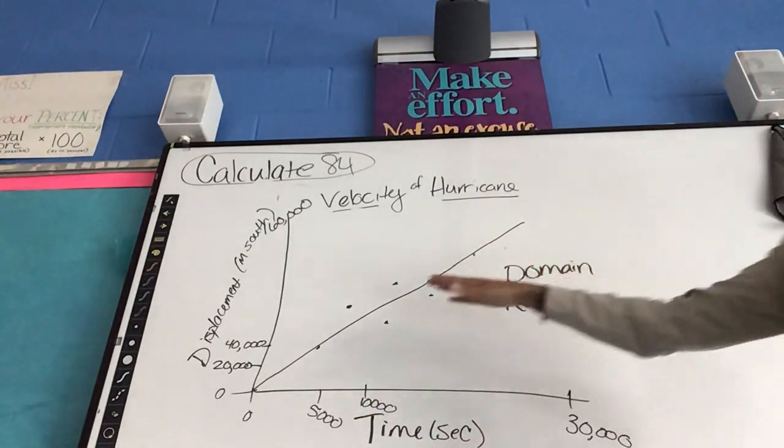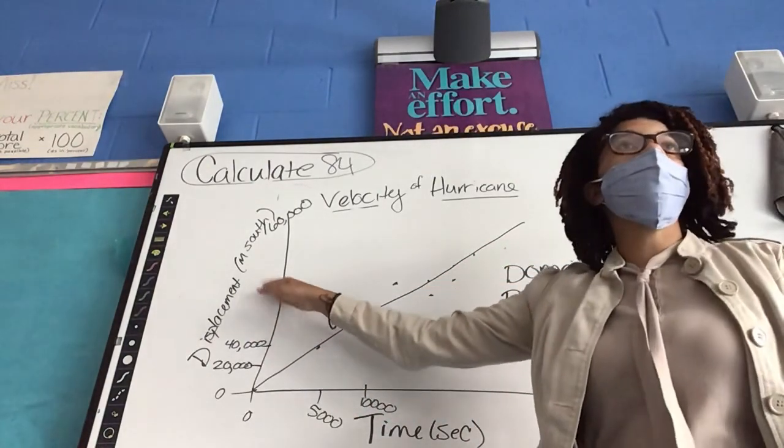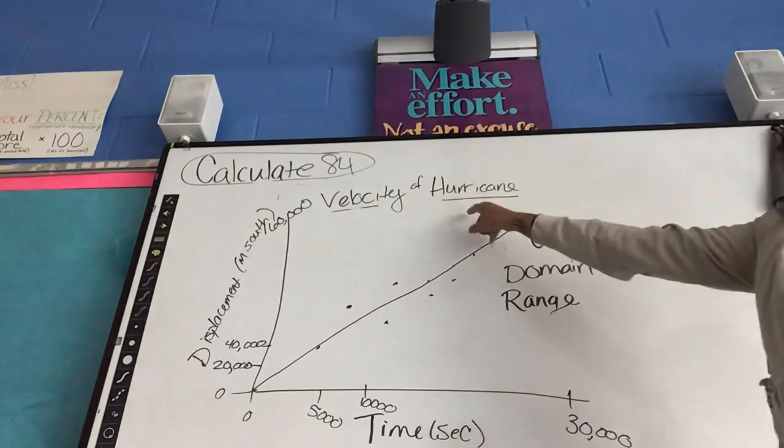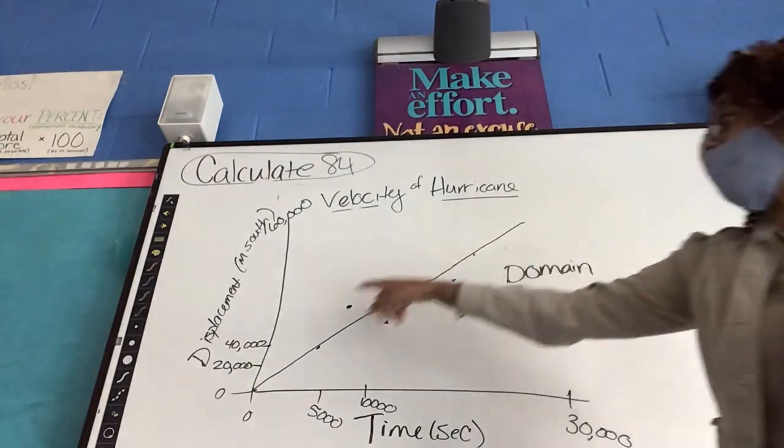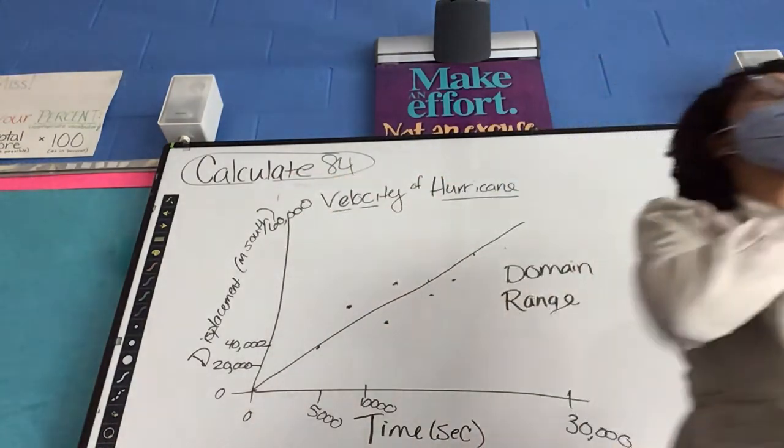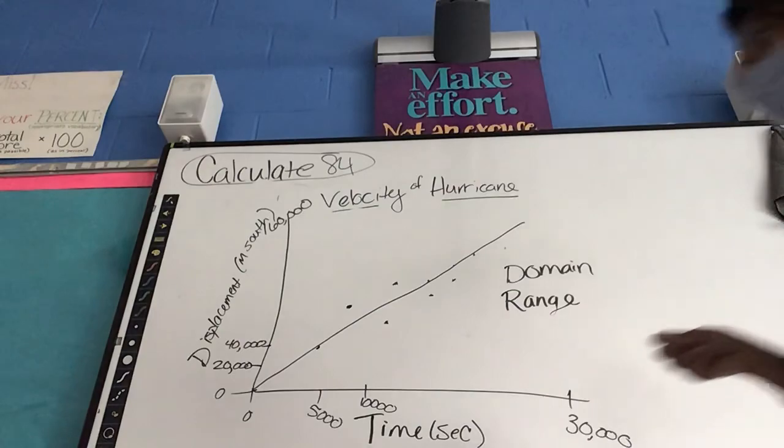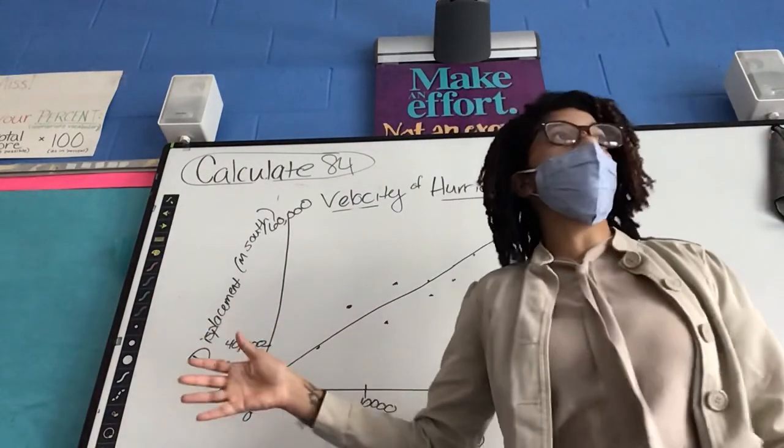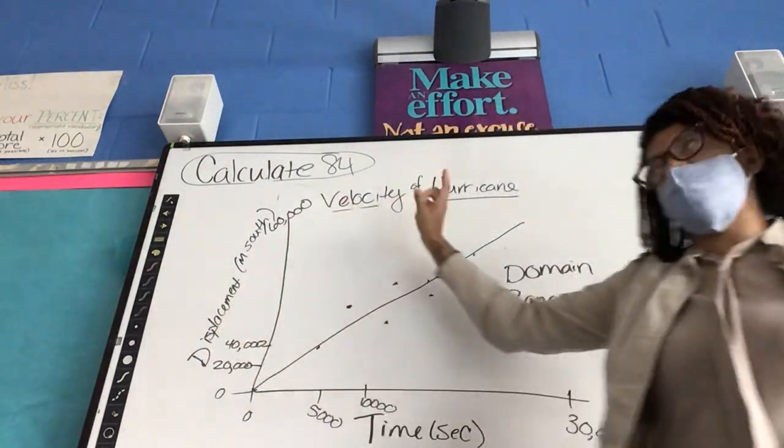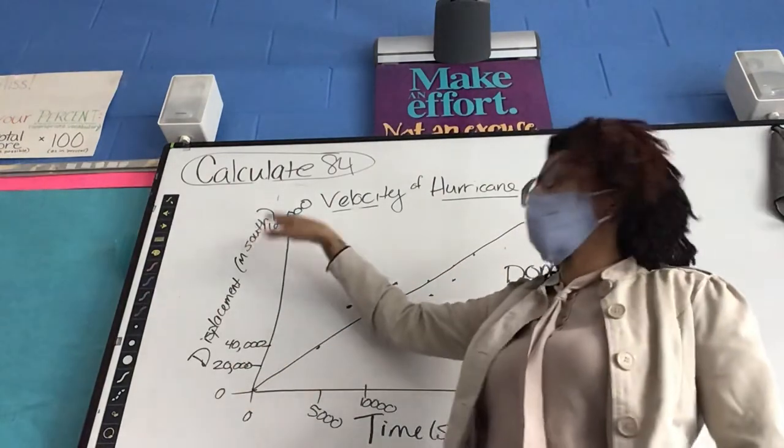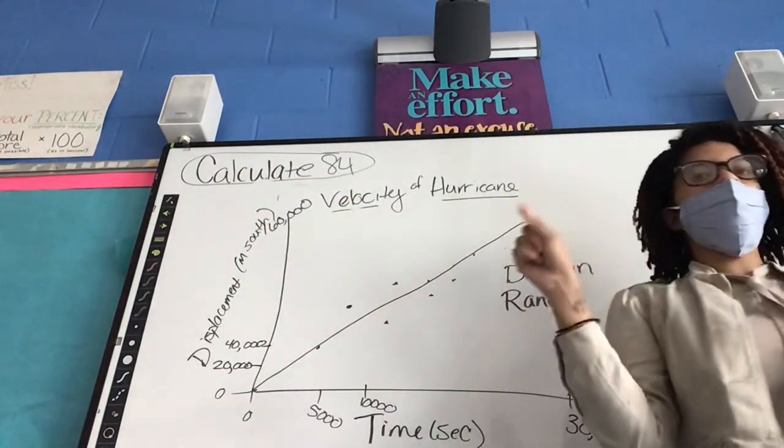So, you're going to say my range is the displacement caused by the velocity from zero to 160,000 meters south. So, I'm going to say that again. You want to make sure you understand that the displacement is caused by velocity. So, my range is the displacement or the damage caused by the velocity from zero to 160,000 meters south.